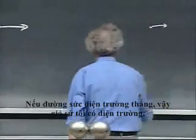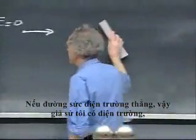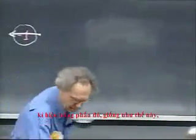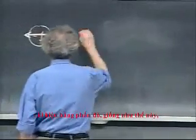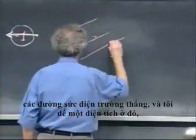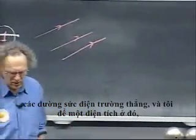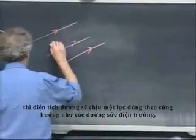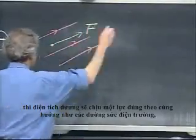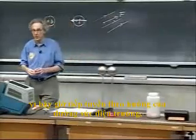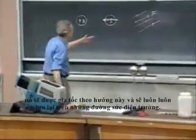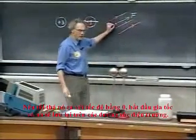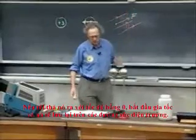If an electric field line is straight, so I have electric fields, say we have fields that are like this, straight E field lines, and I release a charge there, for instance a positive charge, then the positive charge would experience a force exactly in the same direction as the field lines because the tangent now is in the direction of the field line. It would become accelerated in this direction and would always stay on the field lines. If I release it with zero speed, it would start to accelerate and it would stay on the field lines.